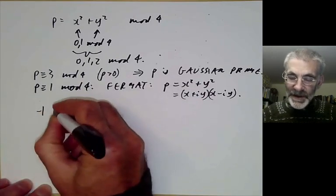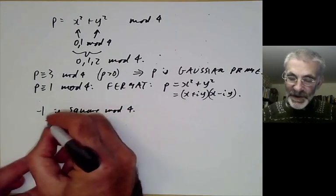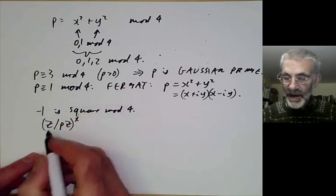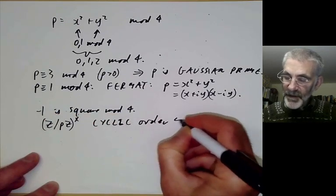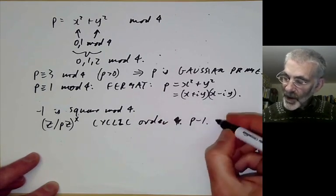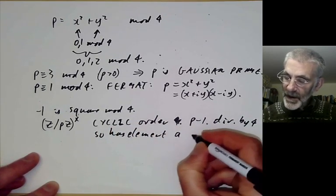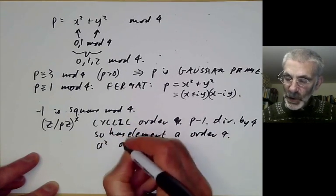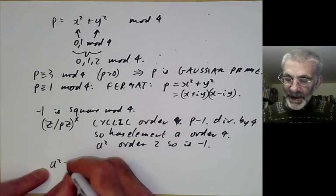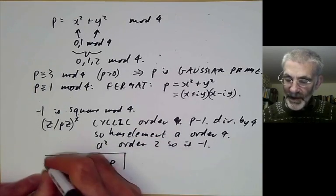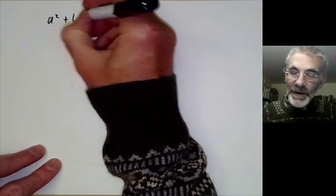We can prove Fermat's theorem using unique factorization for Gaussian integers. First, note that minus 1 is a square modulo p when p is 1 mod 4. The integers modulo pZ form a cyclic group of order p minus 1 under multiplication, and since p minus 1 is divisible by 4, this group has an element a of order exactly 4. Then a squared has order 2, so a squared equals minus 1, meaning a squared equals minus 1 plus np for some integer n.